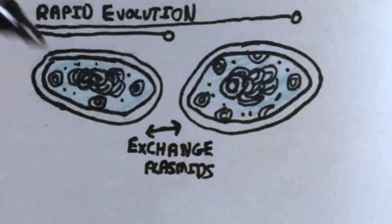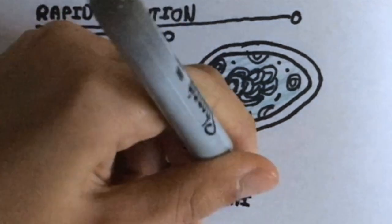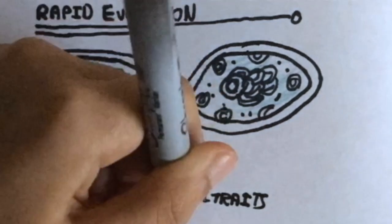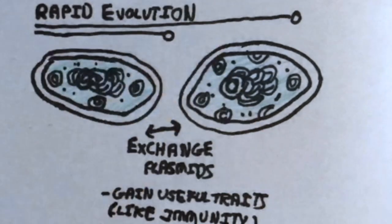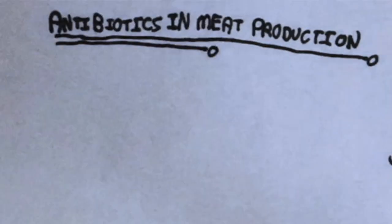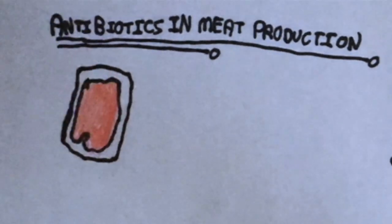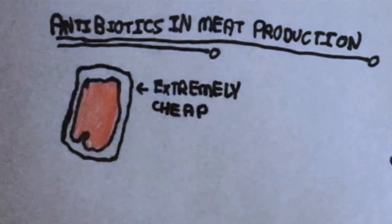Combining the factors of extremely fast generations and the exchange of plasmids, superbugs can arise. These are bacteria that are immune to multiple antibiotics. Antibiotics have been prescribed extremely freely across the developed world and have been heavily used in meat production, transferring deadly bacteria immune to antibiotics from livestock to us.